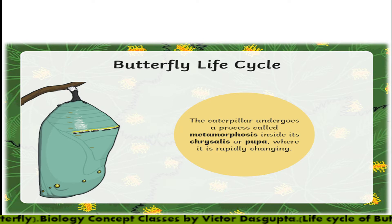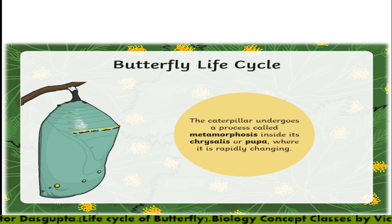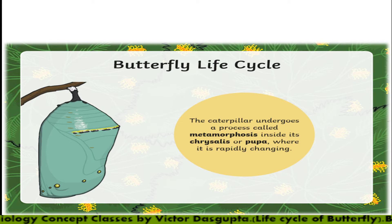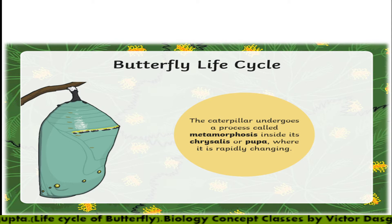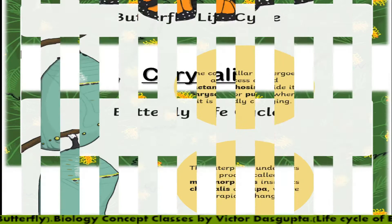As we already know from the life cycle of the frog, metamorphosis is the progressive change in the life cycle of an organism. The caterpillar, inside that pupal cage, changes itself to form a butterfly — this is metamorphosis. Inside this pupal cage, one chrysalis or pupa is present, where it is rapidly changing its morphological and physiological activities.